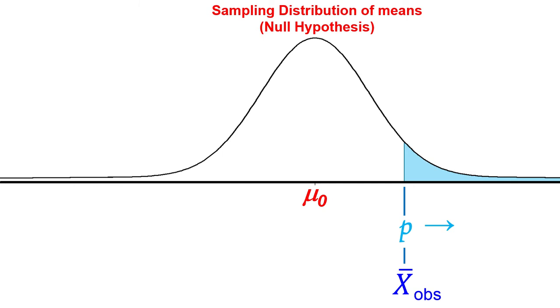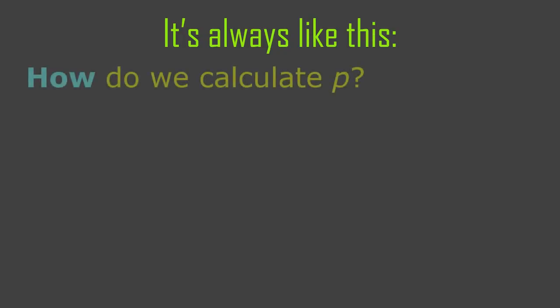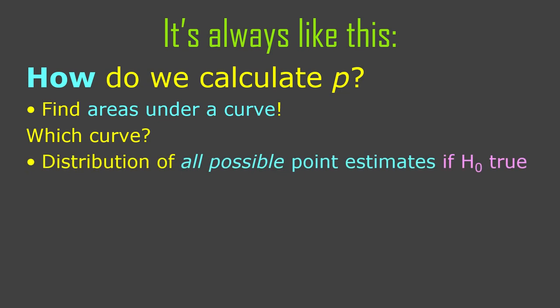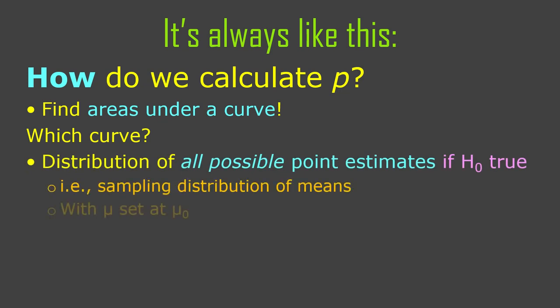That p-value is calculated by putting our sample mean in the null hypothesis's world, then calculating the area that the null hypothesis says should exist beyond our sample mean — the unlikeliness or low probability of our sample mean if the null hypothesis were true. We find areas under the sampling distribution of the mean if the null hypothesis is true: the distribution of all possible sample means we should expect to observe if the null hypothesis is true.